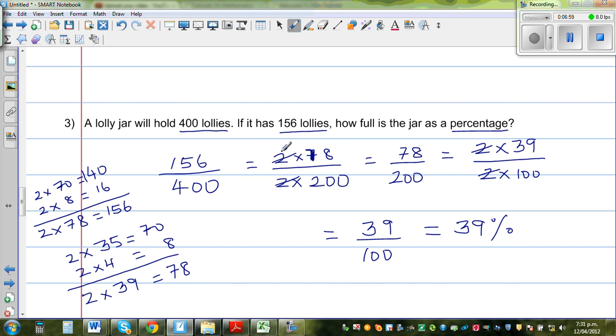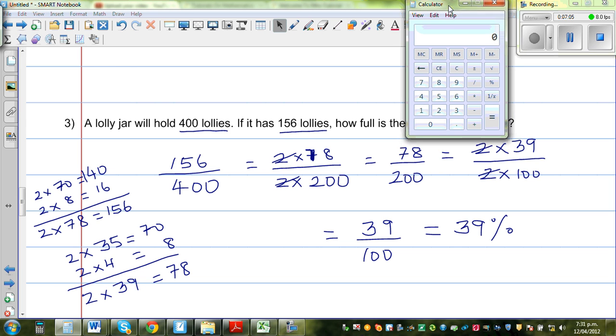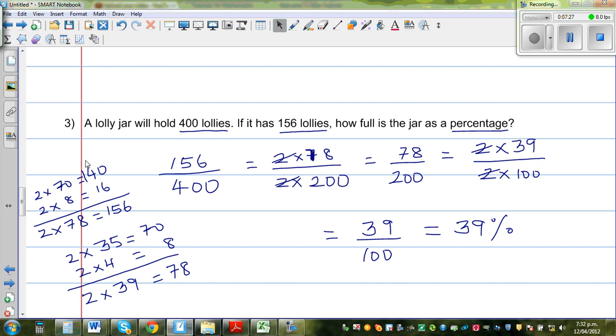And if you want to do on a calculator, if you have a calculator, this is a simple Microsoft calculator. So you can go 156 divided by 400. That will give you a decimal answer, which is 0.39. So this is out of 1, times it by 100. That will give you 39%.